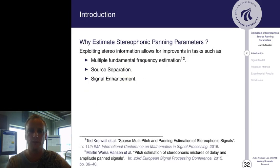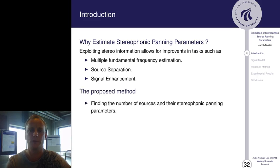So why do we estimate stereophonic panning parameters? It's because improvements have been shown in research on multiple fundamental frequency estimation. Also, improvements for source separation and signal enhancements, among others, are possible. Stereophonic mixtures is something we observe, for example, in TV broadcasts, in radio broadcasts. Therefore, it's a very widely used format. So we propose to find the number of sources and the stereophonic panning parameters related to the sources.